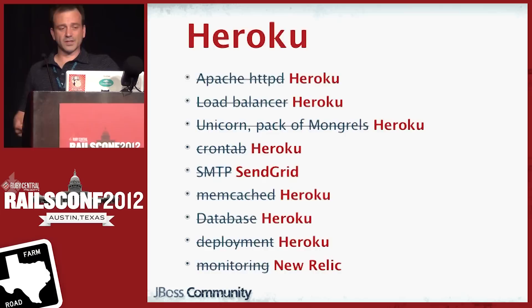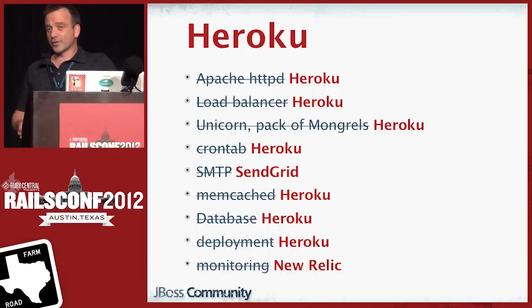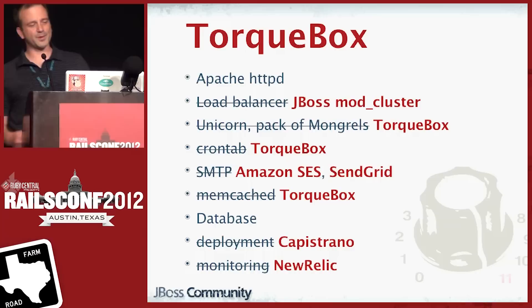On the other end of the spectrum is platform-as-a-service, like Heroku, where you're basically outsourcing everything except your application. Our long list of things to think about now just becomes Heroku for most of it, SendGrid for email, and New Relic for monitoring. Heroku is fantastic — they make it incredibly easy to deploy your applications. TorqueBox does not run on Heroku yet. We've made some efforts to make that happen, but it's not quite there yet.